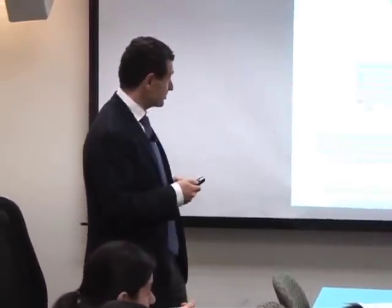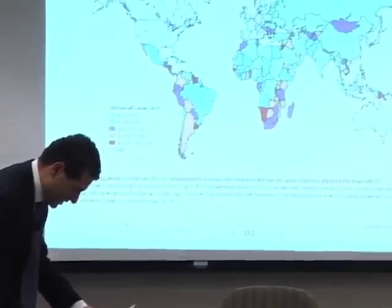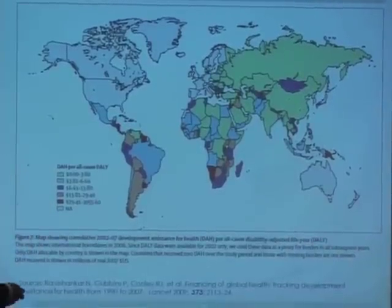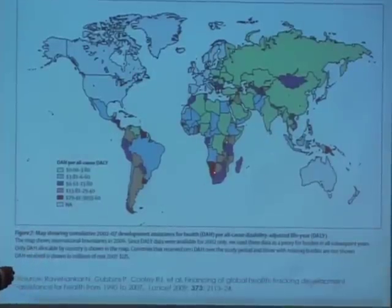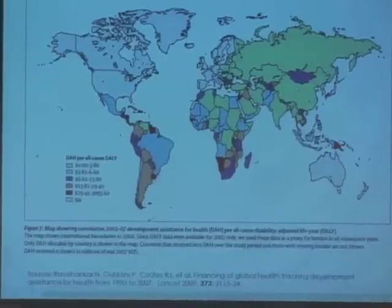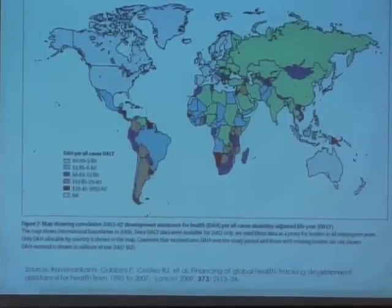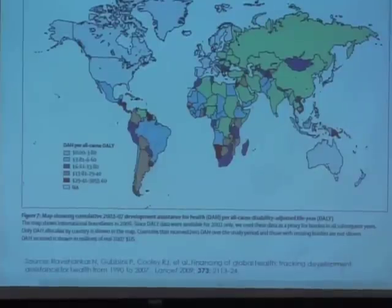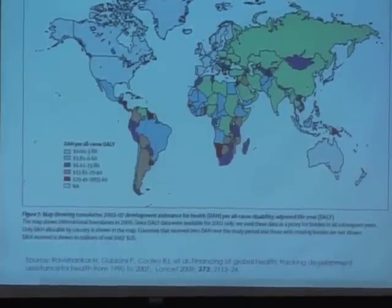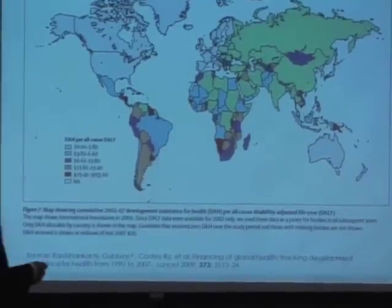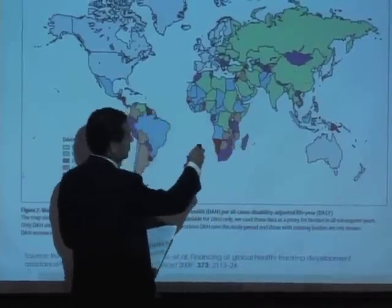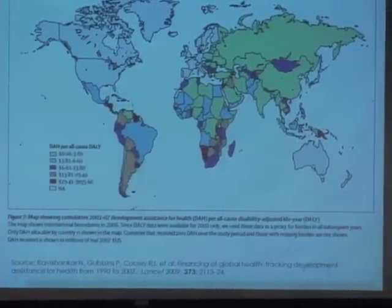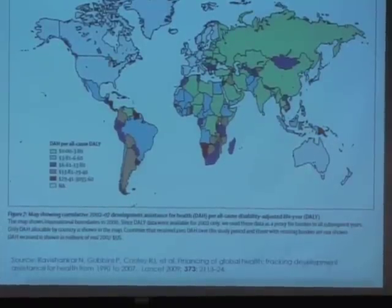Looking at the countries getting the most money, you've got Namibia getting quite a bit, Guyana, Uruguay, and Papua New Guinea. There's a high concentration in some countries, and some countries are surprisingly left out even though they're poor. Jordan gets quite a bit of resources, mainly from the UN Relief Works Agency for Palestinian refugees because more than half their population are Palestinian refugees.